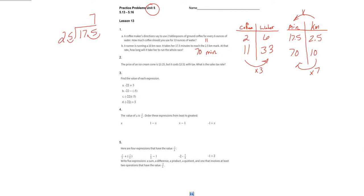There we go. Let's see how we're doing on time. We're only two minutes in, so we should be able to knock out number two as well. Number two says the price of an ice cream cone is three dollars and 25 cents, but it costs three dollars and 51 cents with tax. What is the sales tax rate?